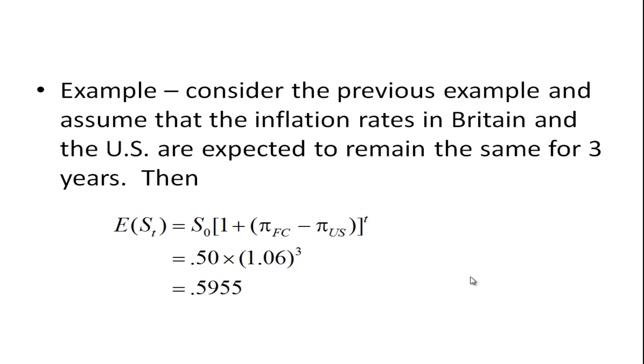For example, consider the previous example and assume that inflation rate in Britain and the US are expected to remain the same for three years. To find the expected exchange rate in three years, we use this formula: £0.50, the original exchange rate at time period zero, times 1.06 raised to the third power. We would expect in three years the spot exchange rate would be £0.5955 per US dollar.